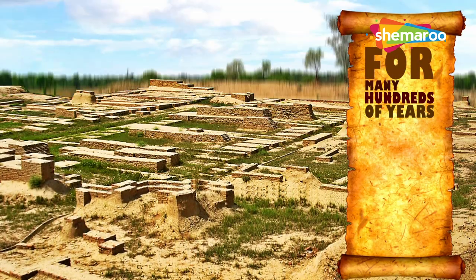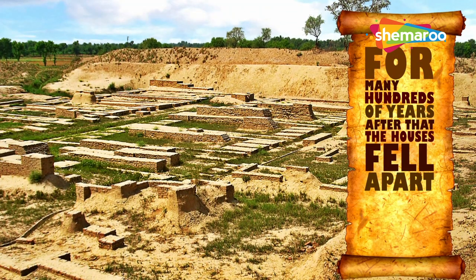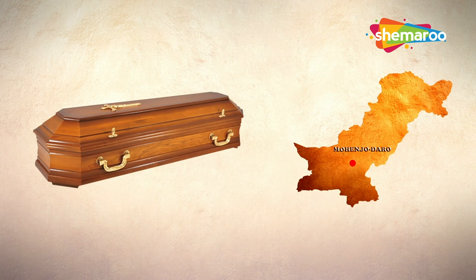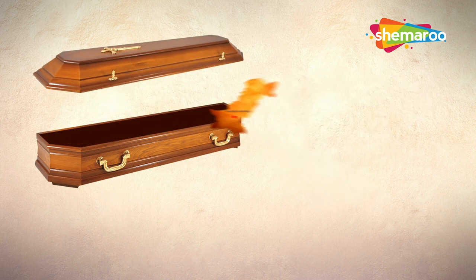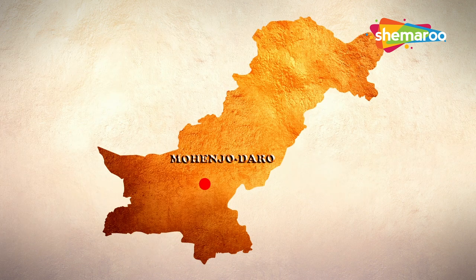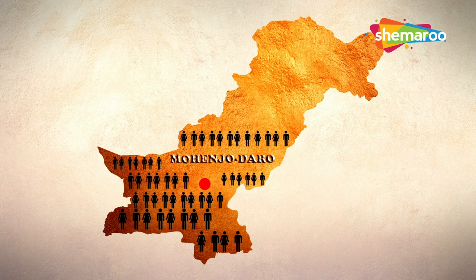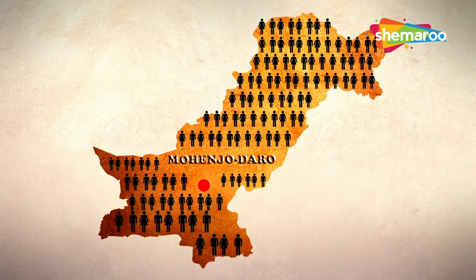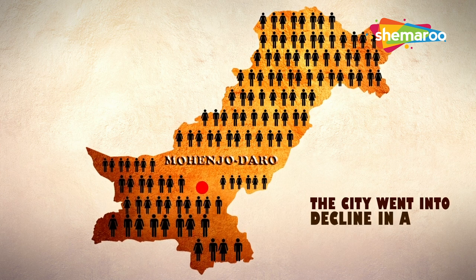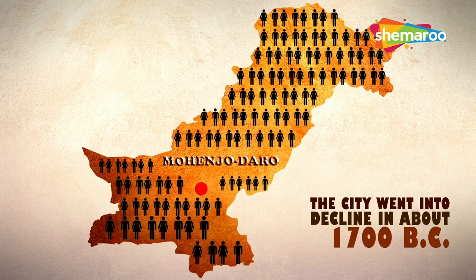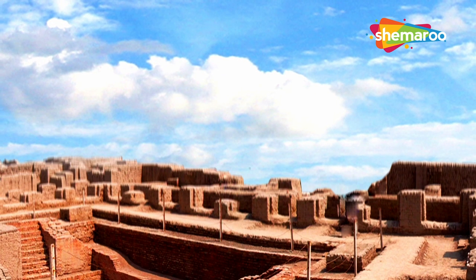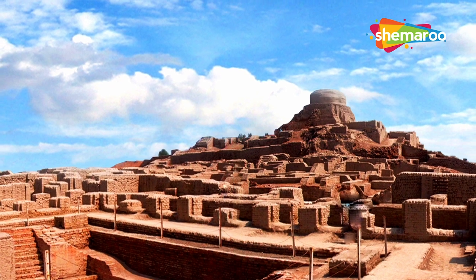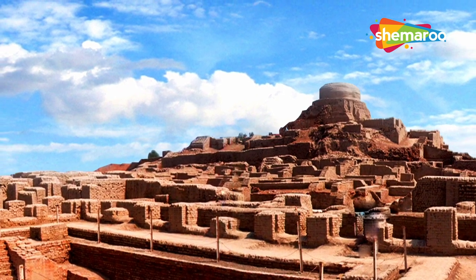For many hundreds of years after that, the houses fell apart and the city was eventually covered by dirt and sand. The period of glory slowly got buried in the dust of time. The city of Mohenjo-daro was a large, busy place where many thousands of people lived and worked. However, for reasons we are not sure of, the city went into decline in about 1700 BC. The remains of the city tell us the story of the rise of a great civilization, but its decline remains a mystery till date and perhaps will stay unsolved forever.